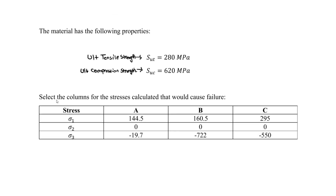We want to select the column for the stresses calculated that would cause failure — is it column A, column B, or column C — based on the given principal stress conditions. The principal stresses are given in order from greatest to smallest: sigma 1 is the biggest, sigma 2 is 0 and does not change, but sigma 3 does change across columns.